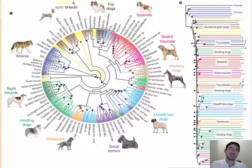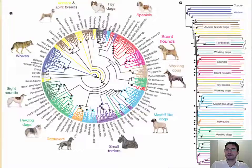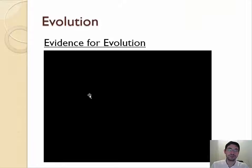Now I want to show two quick videos — one that shows the evolution of dogs, and another that shows a very funny example of actual selection. So first, the dogs.